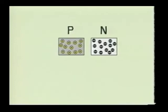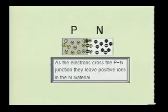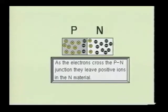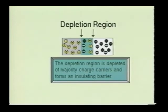When the P-N junction is formed, some of the donor electrons will drift across the junction into the P-material, leaving positive ions in the N-material. As the electrons drift into the P-material, it creates a negative potential which repels any further drifting of the free electrons. The positive ions in the N-material create a positive potential which will repel any drifting of the holes into the N-material. This small area where the drifting of the electrons and holes have occurred will form a new area within the semiconductor material. This area is termed the depletion region.